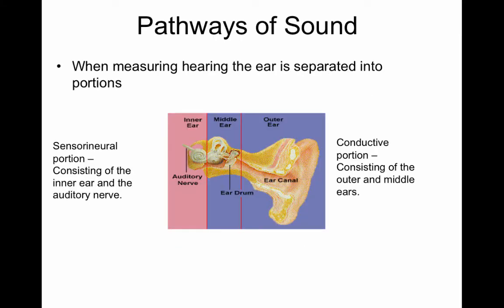When we're measuring hearing, we separate out the portions. The conductive portion is the outer ear and the middle ear, and the sensorineural portion is the inner ear and the auditory nerve.